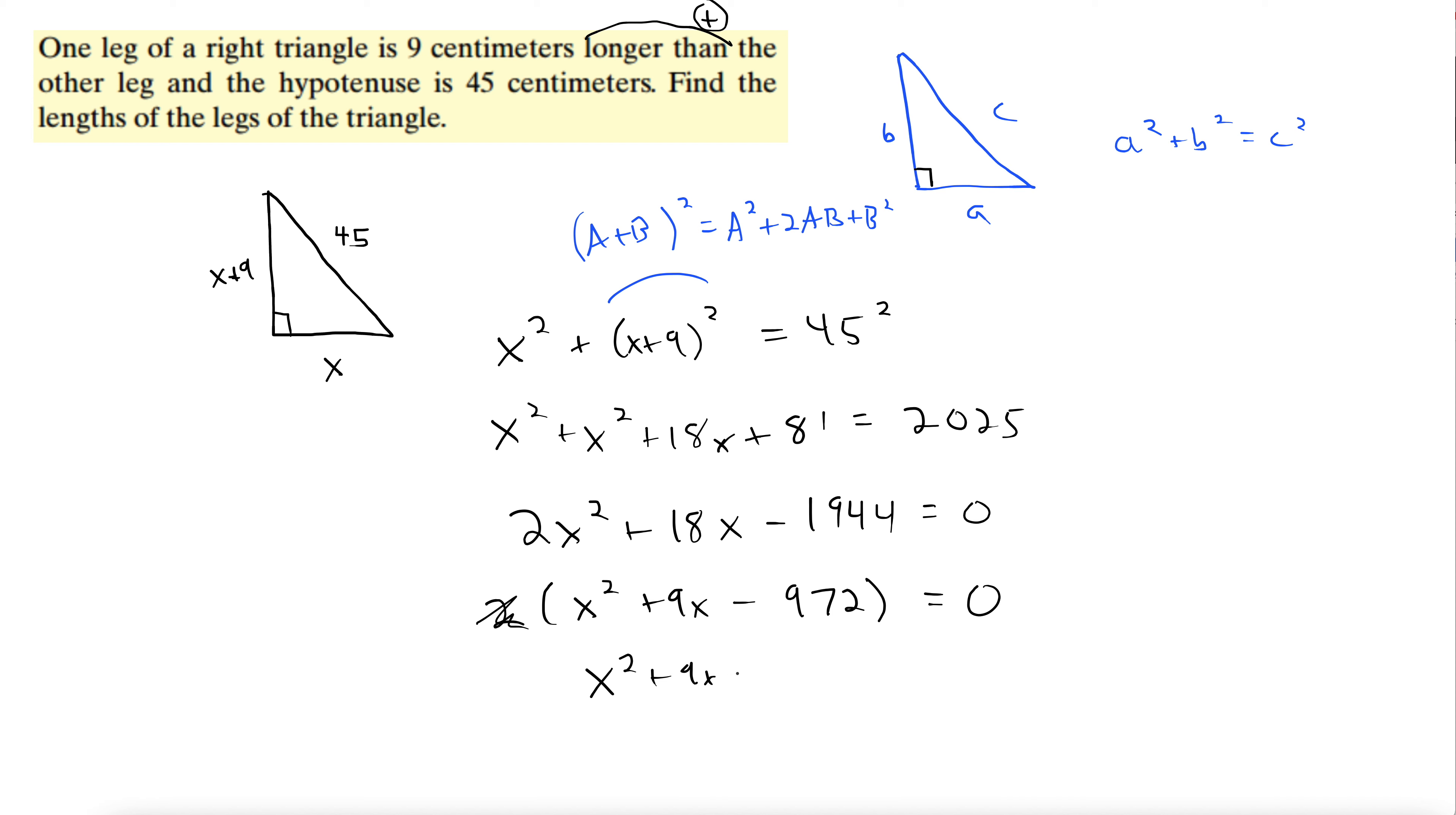So what does that leave us with? x squared plus 9x minus 972 equals 0. And now we have to factor this. So that is no joke. Let's see what we can do here. So we have negative 972 here, 9 down here. And we need to find these factors. So our goal, we need factors of negative 972 that add to 9. Now this is going to take a long time. Maybe.